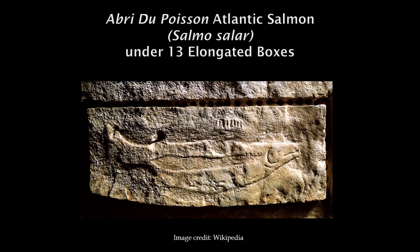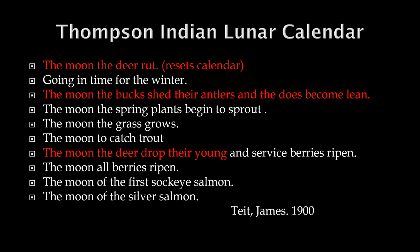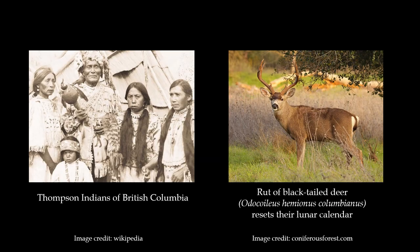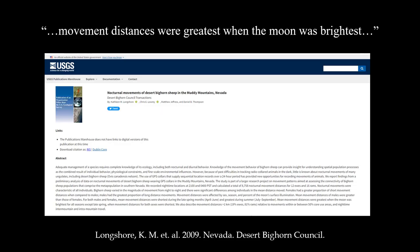A common worldwide intuitive method of lunar counting is 13, from the first crescent moon to the first full moon. On the Thompson Indian lunar calendar we also find the major life history events of deer — when they rut, shed their antlers, and drop their young. One Thompson band reset their lunar calendar by the rutting of the black-tailed deer; other bands reset their calendars by the rutting of mountain goats (an ibex), the rutting of bighorn sheep, and when groundhogs go to their winter dens.